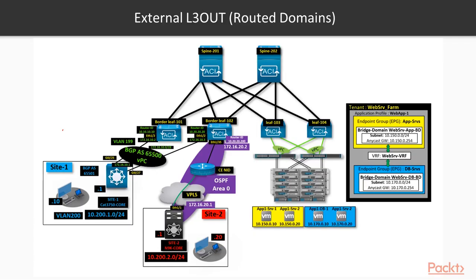Let's discuss external L3-Outs. When we work with external L3-Outs, we're basically connecting a remote network onto our ACI fabric by creating an external router domain — in this case, the L3-Out.